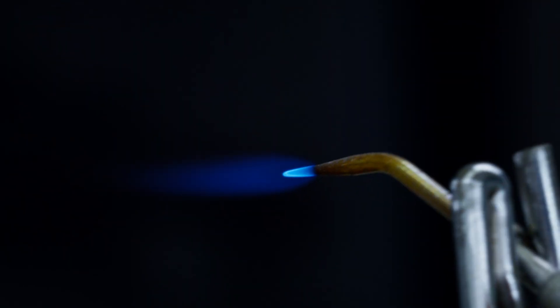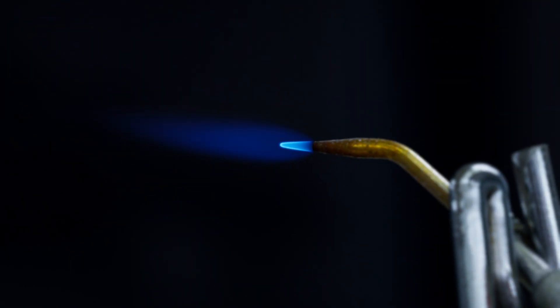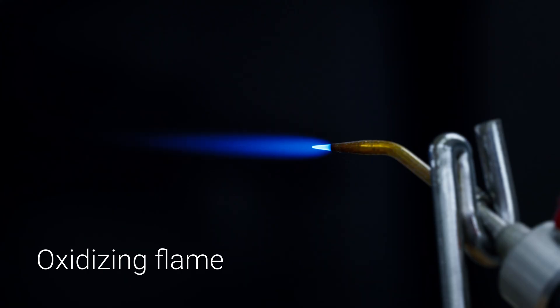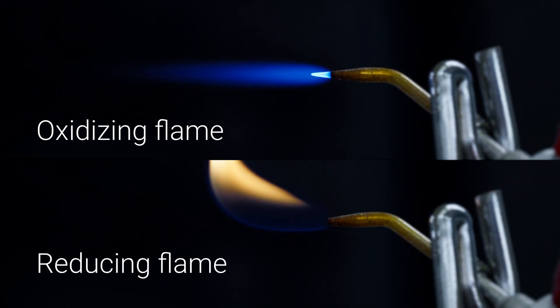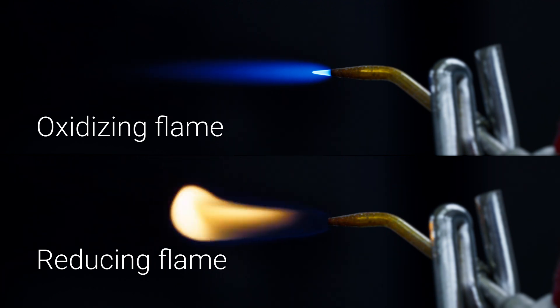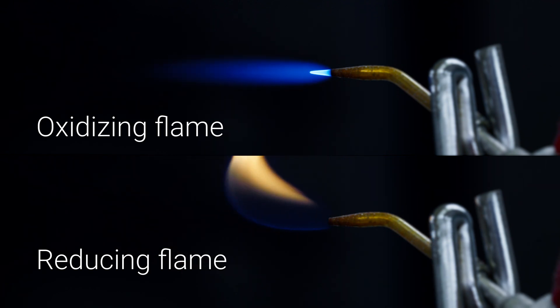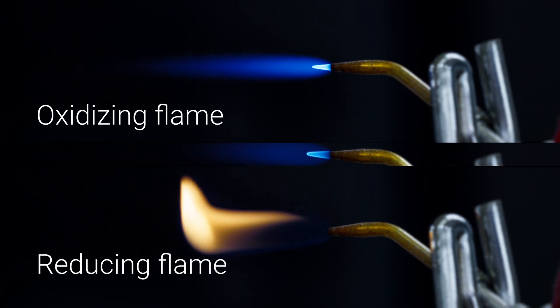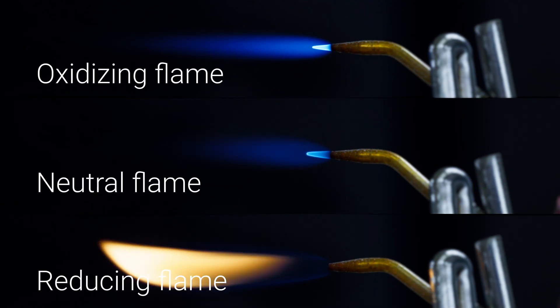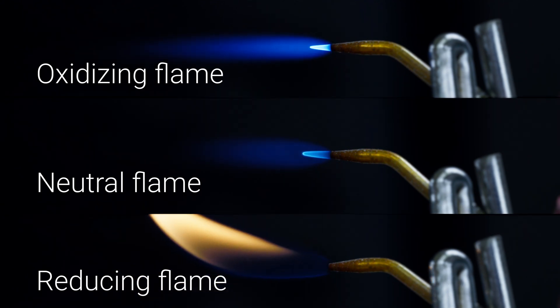When soldering, I like to use a neutral flame, something like this. What you don't want is an oxidizing flame. It burns way too high. If your flame is not hot enough, it's going to turn into a reducing flame, and you don't want that either. You want it right in the middle, a nice neutral flame. This will get you what you want.